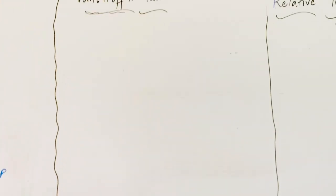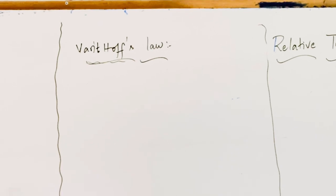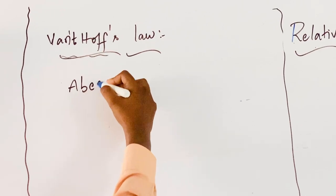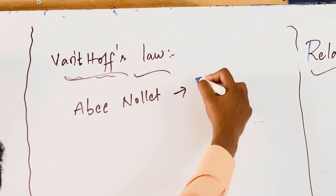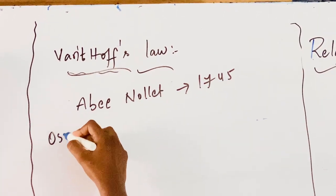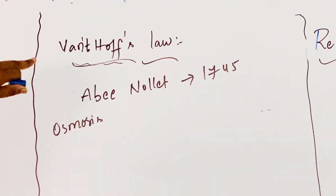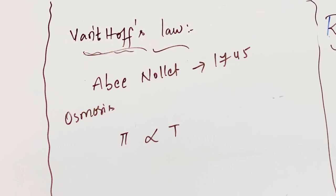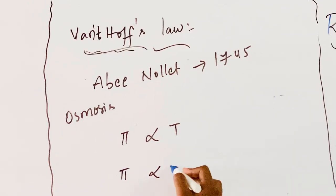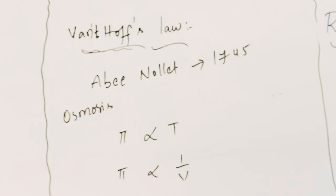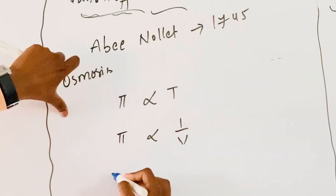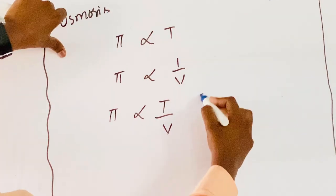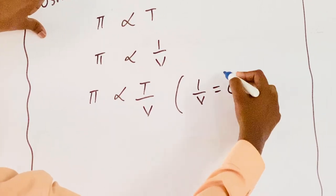Van't Hoff's law is one of the derivations obtained from osmosis. The osmosis phenomenon was first experimented by Abbé Nollet in the year 1745. According to Van't Hoff, osmotic pressure is directly proportional to temperature in Kelvin, and osmotic pressure is inversely proportional to the volume of the solution. Combining these two proportionalities, Pi is directly proportional to T divided by V.